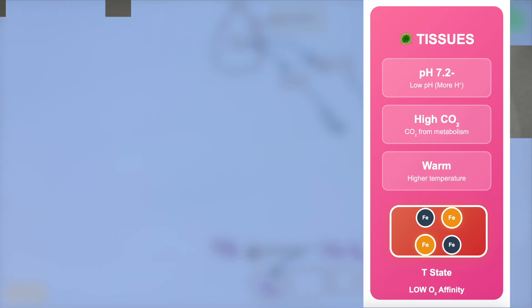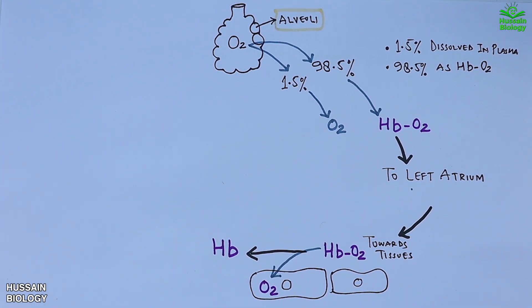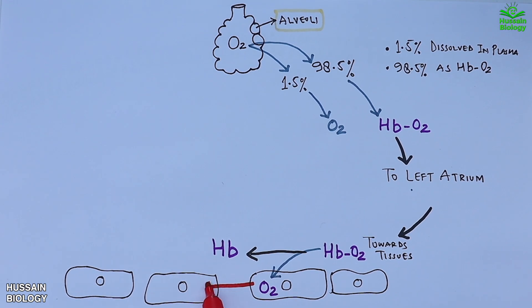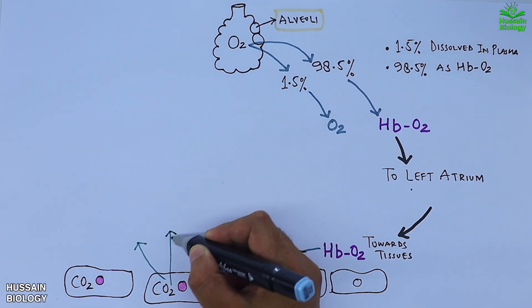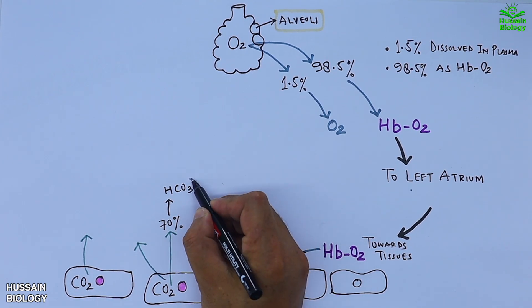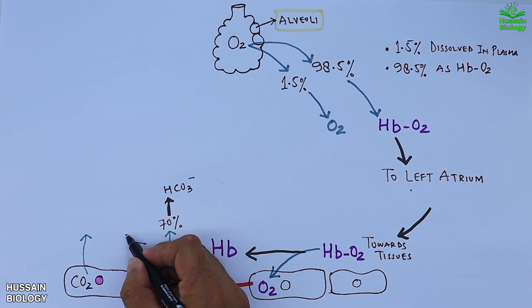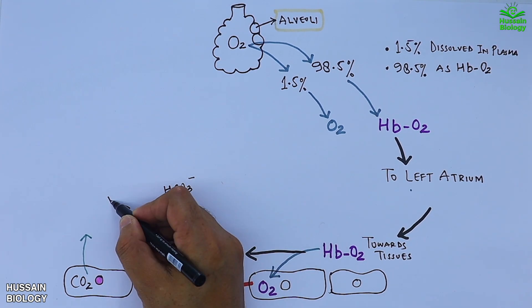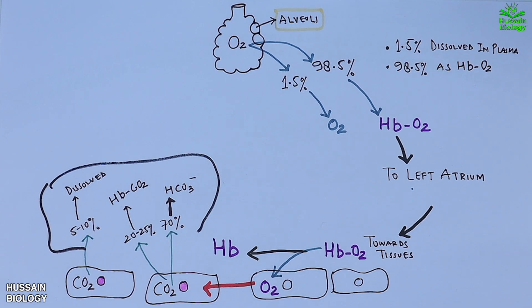The hemoglobin molecule is now deoxygenated. At this point, carbon dioxide produced by tissues as a metabolic waste product is loaded into the blood. This happens in three main ways: about 70% of CO2 is converted into bicarbonate ions (HCO3⁻), 20-25% binds directly to hemoglobin to form carbamino-hemoglobin (HbCO2), and the remaining 5-10% is dissolved directly into the plasma.